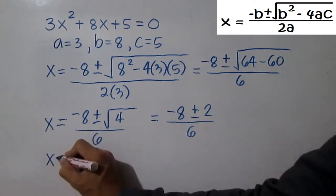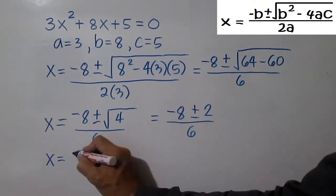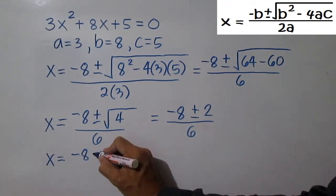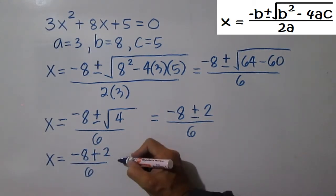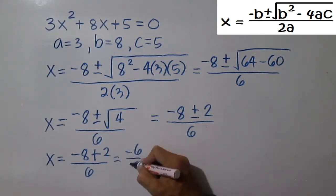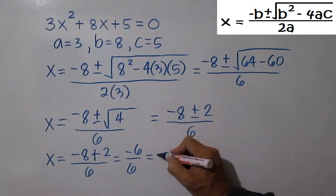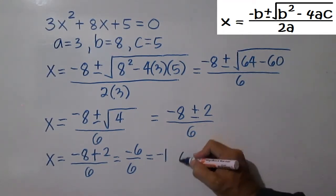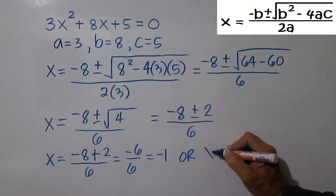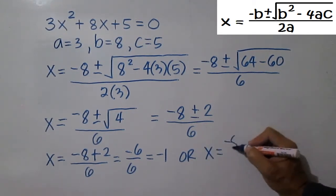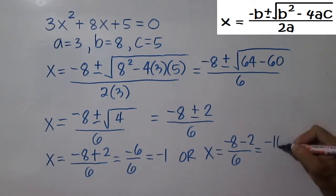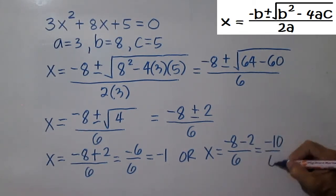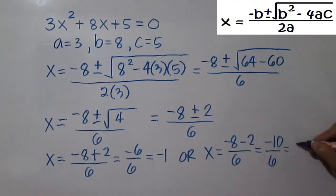We have two values of x. x equals negative 8 plus 2 all over 6, which is equal to negative 6 over 6, which is negative 1. Or x equals negative 8 minus 2 all over 6, which is equal to negative 10 over 6, which is equal to negative 5 over 3.